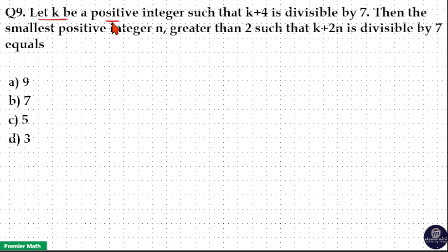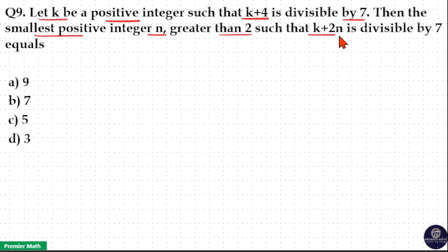Let k be a positive integer such that k plus 4 is divisible by 7. Then the smallest positive integer n greater than 2 such that k plus 2n is divisible by 7 equals?